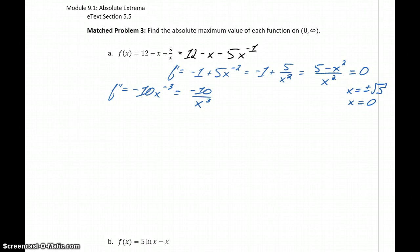Now we need to consider evaluating our second derivative at each of those critical values: at the square root of 5, at negative square root of 5, and at 0. But this is a good time to check and see if there are any of these values that we can throw out.